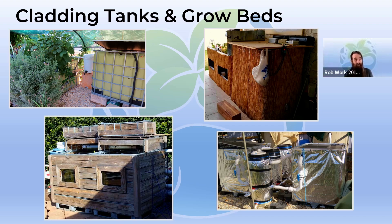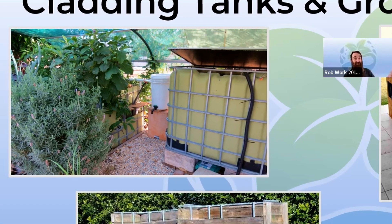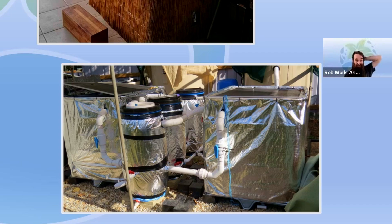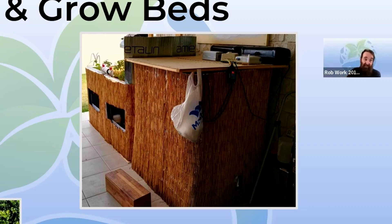Standard IBC totes can be opaque, letting UV light in, which causes algal buildup on the walls when there's nutrient-rich water inside. Here are some examples of how to shield them: painting the outside works, though it can be tricky to get paint to stick — ours lasted about four to five years after sanding. Our aquaculture system is wrapped in house sarking, which has held up really well for around eight years. Ben clad his in old pallets, and Owen used reed landscaping material — there are many ways to shield from UV and make systems look nicer.